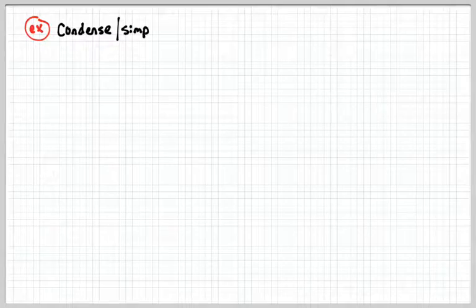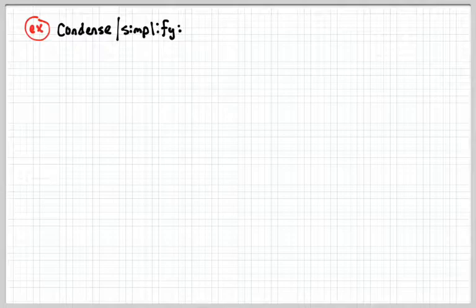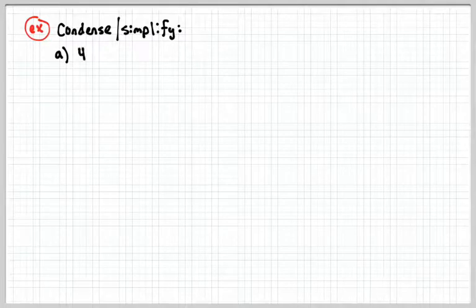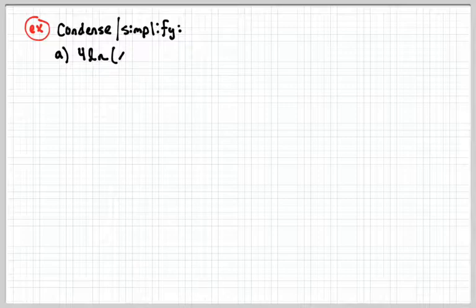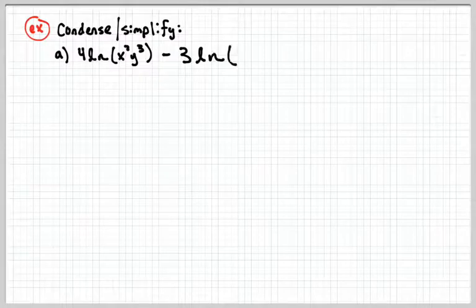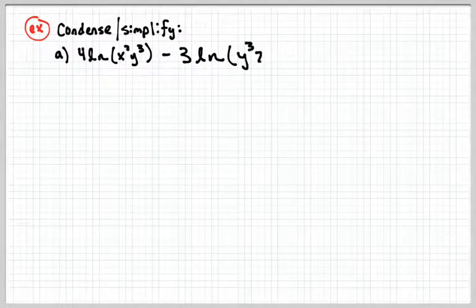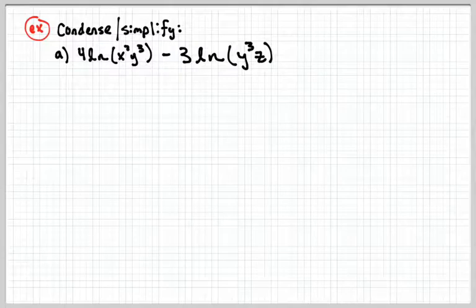I think condensing is harder for students. So we're going to do a couple examples on condensing. Condense or simplify: 4ln(x²y³) - 3ln(y³z). Same thing again.